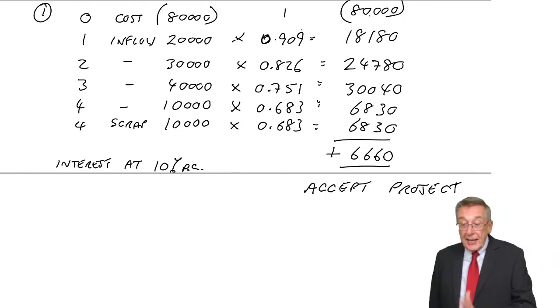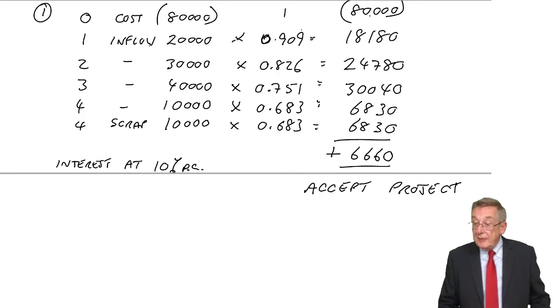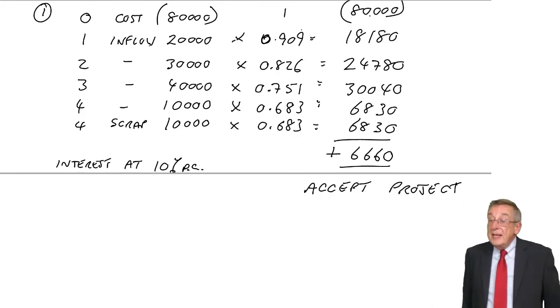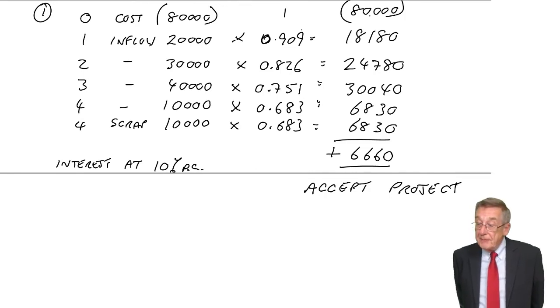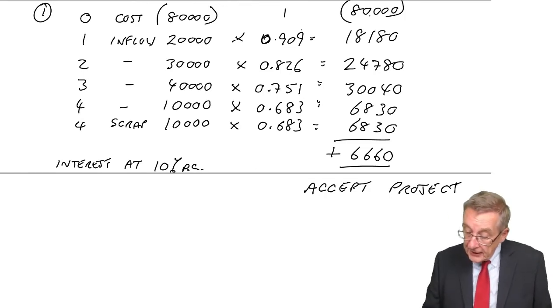We list all the cash flows, outflows, inflows. We discount, we spent enough time discounting in the previous lectures, the net present value, or NPV.